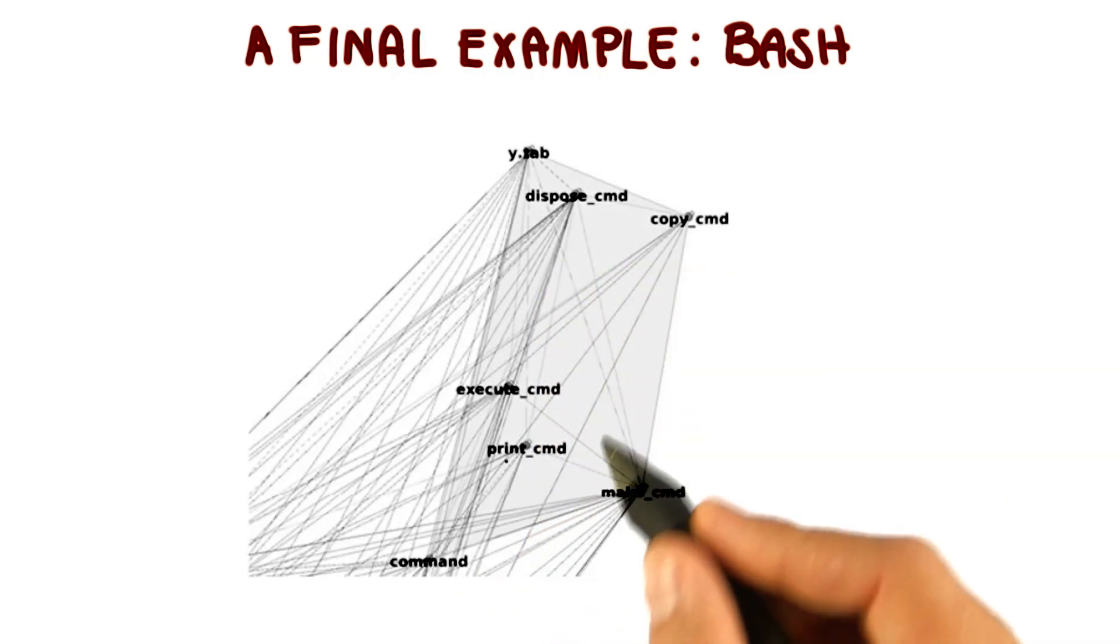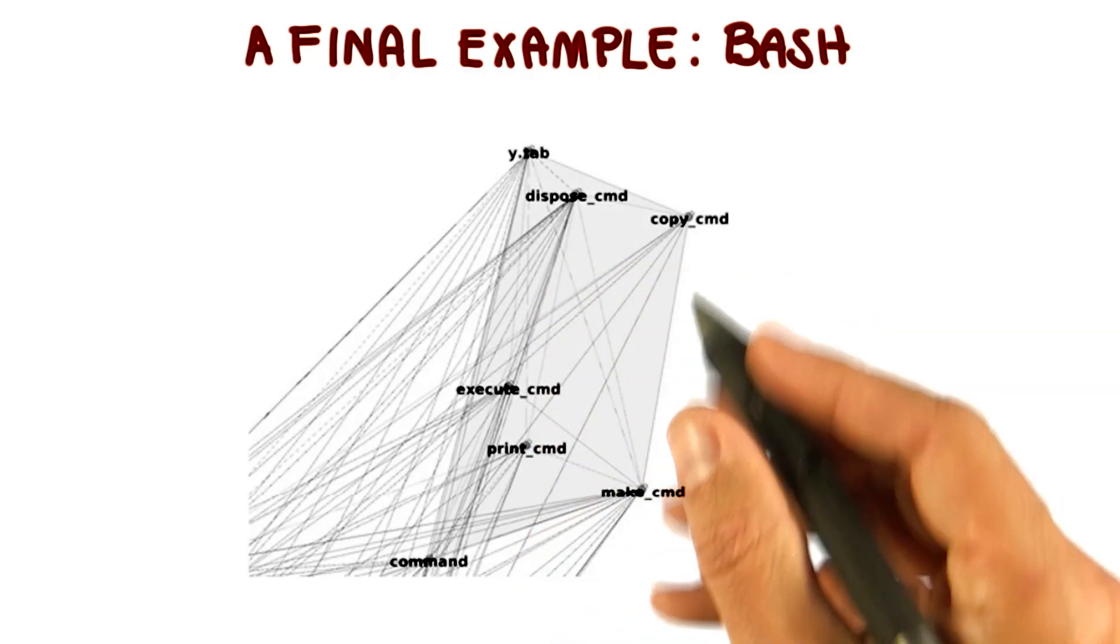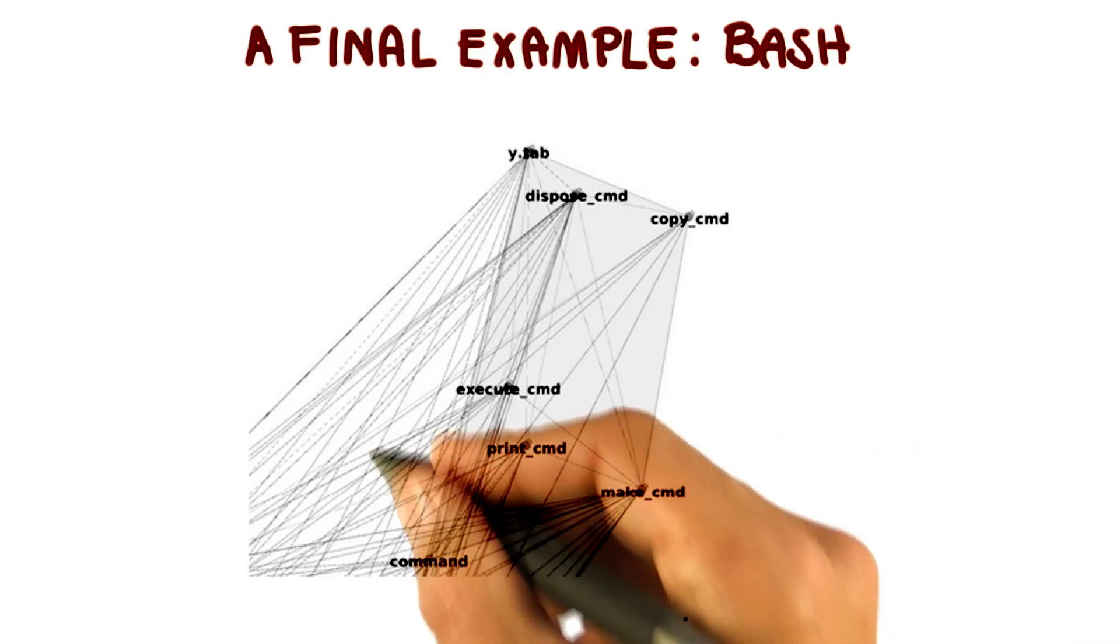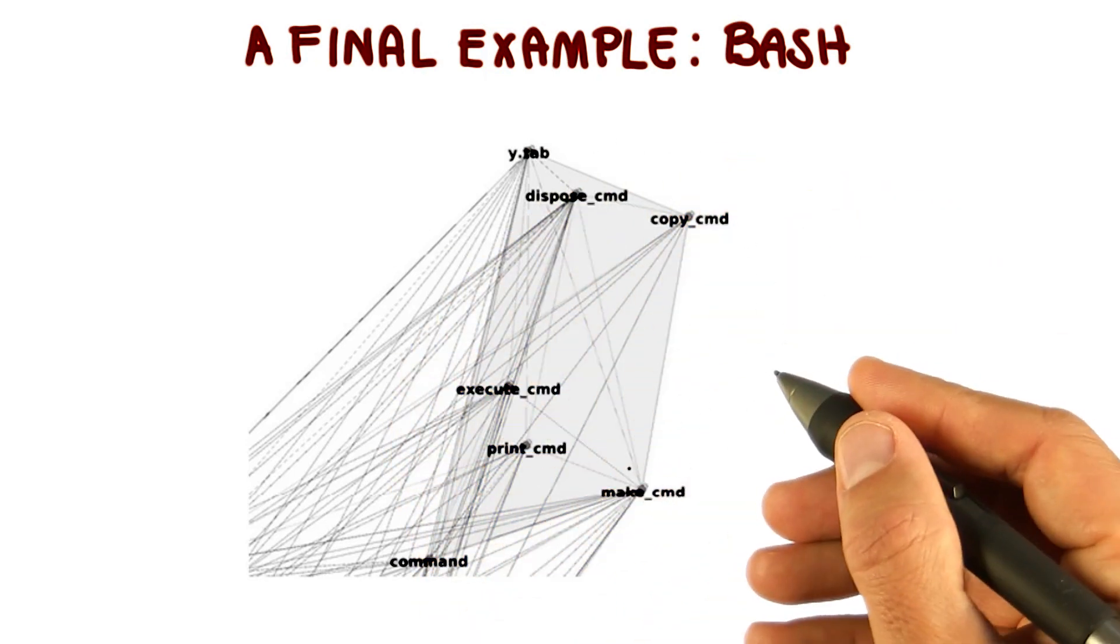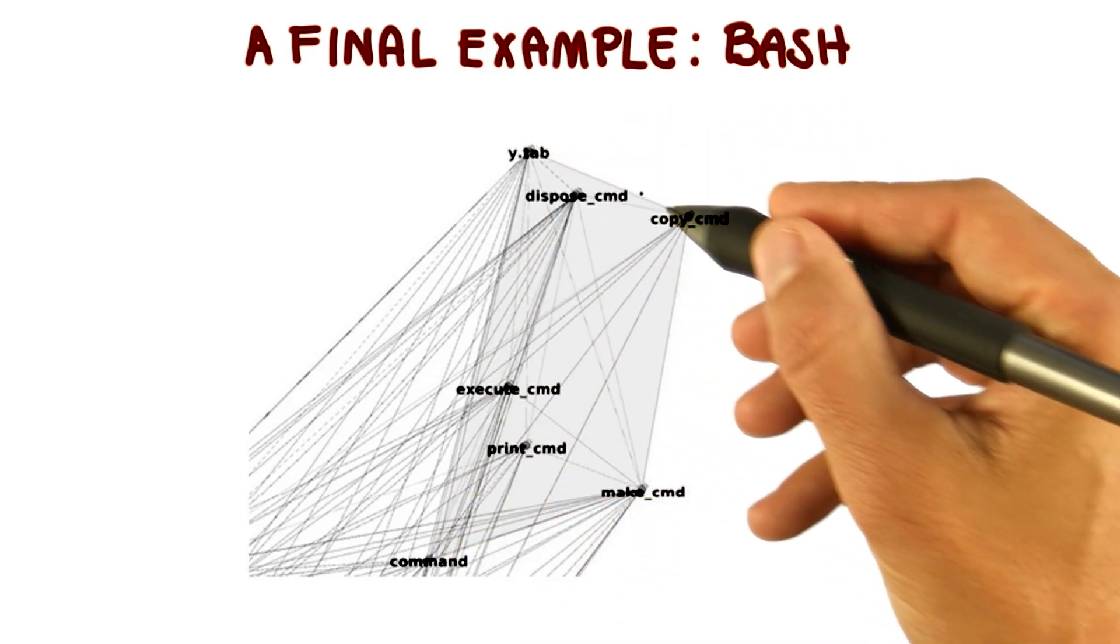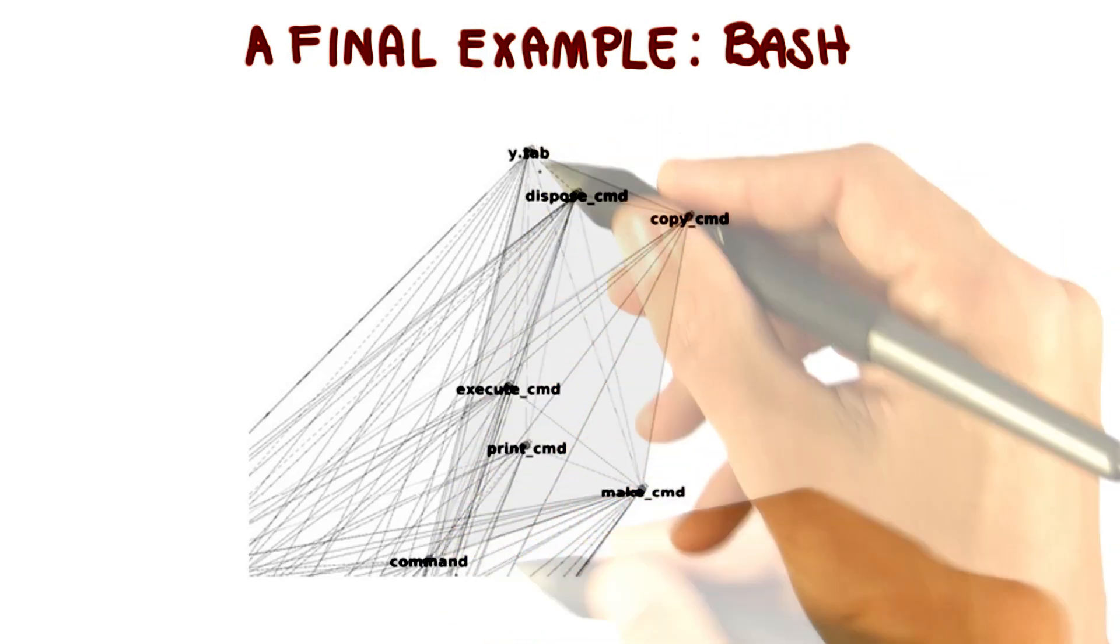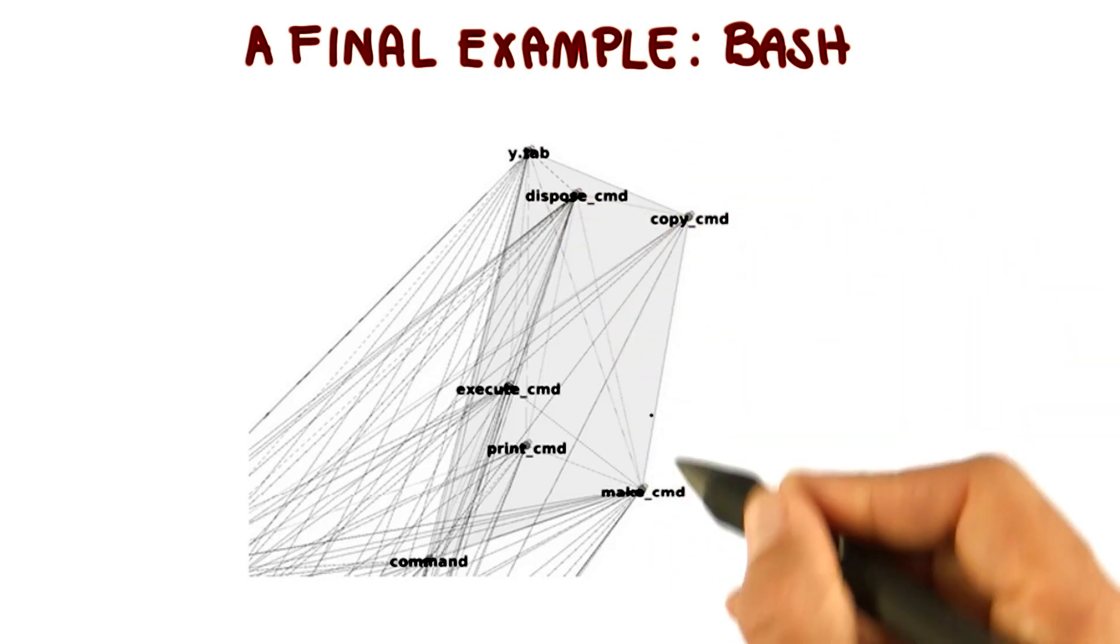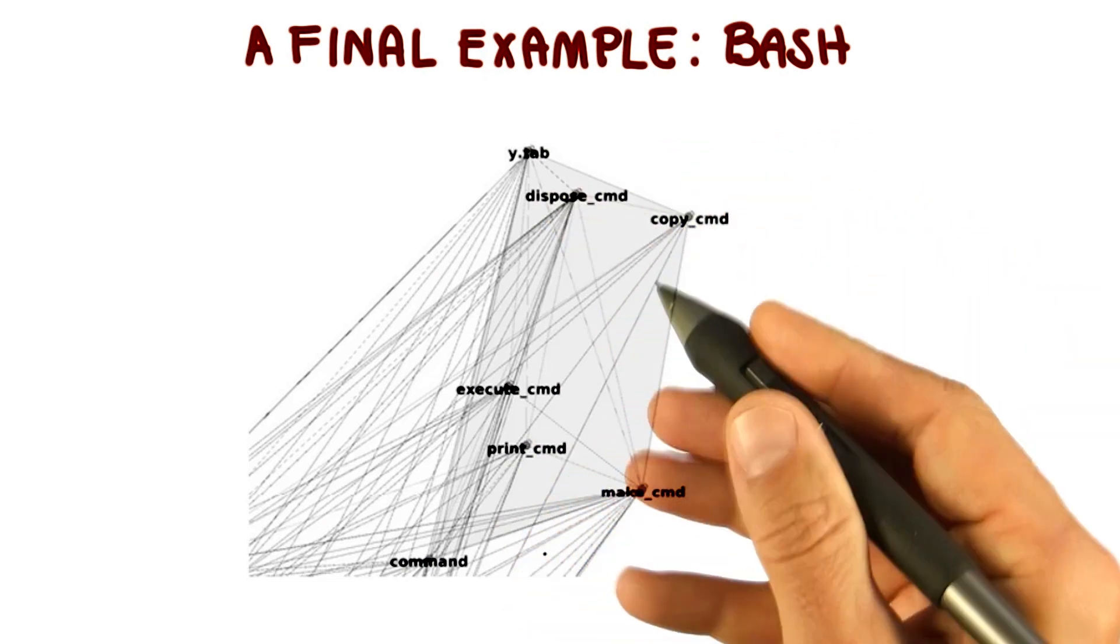What I'm showing here is the descriptive architecture of the commands component of bash, the architecture as implemented. The component is the one here highlighted in gray, and these names are the sub-components of the command component.